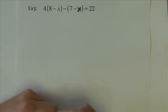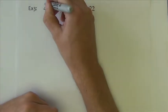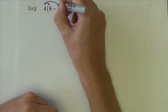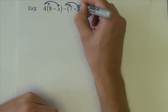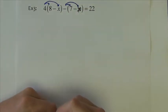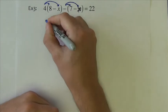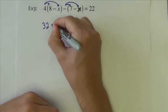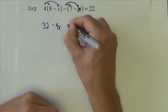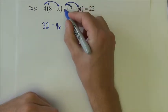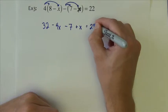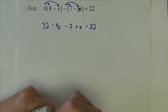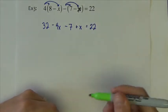I start with distributive property. The 4 is going to distribute. And here, the minus sign, treated as a negative 1, will distribute. So we get 32 minus 4x minus 7. And when we have minus the minus, it becomes plus x equals 22.